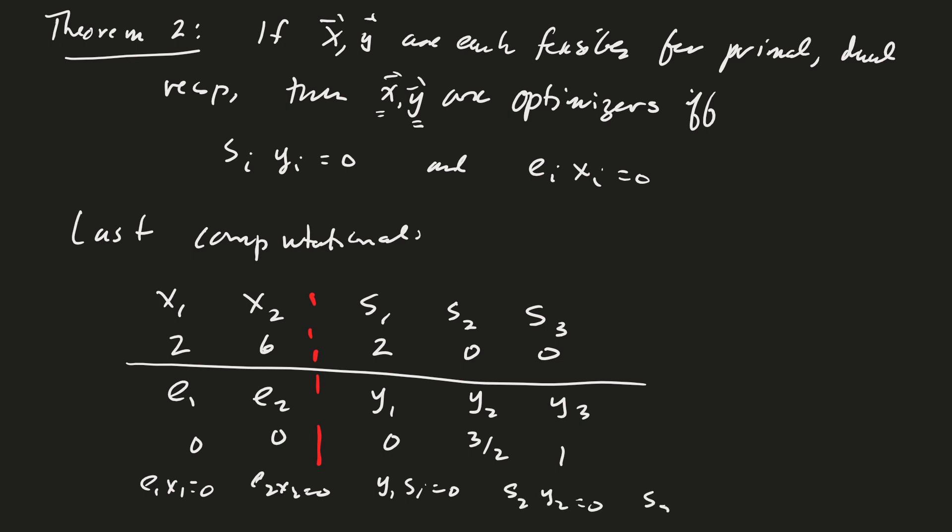e2 times x2 equals 0, y1 times s1 equals 0, s2 times y2 equals 0, and s3 times y3 equals 0. And so because x and y are also feasible for the primal and the dual and this relationship holds, we can say that x is the optimal solution for the primal and this is the optimal solution for the dual.